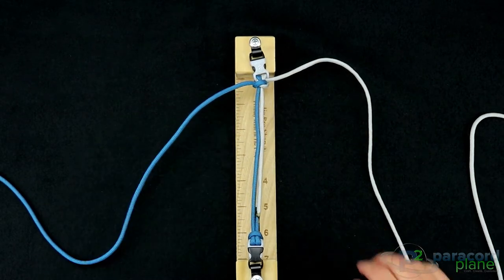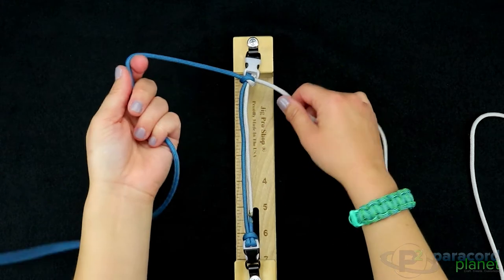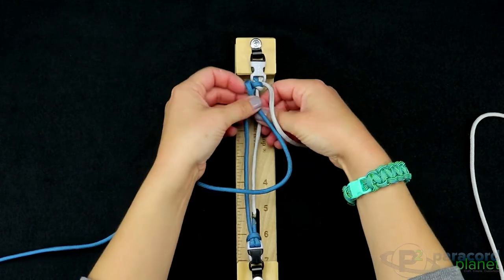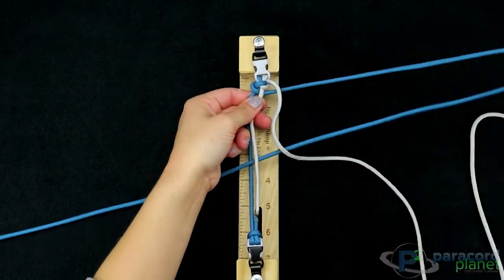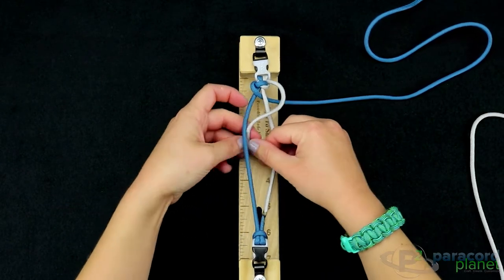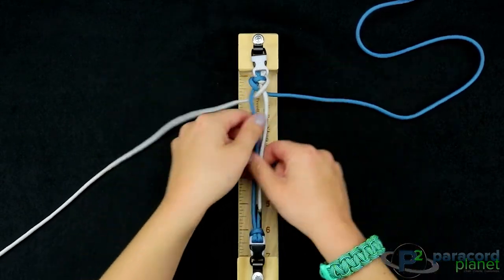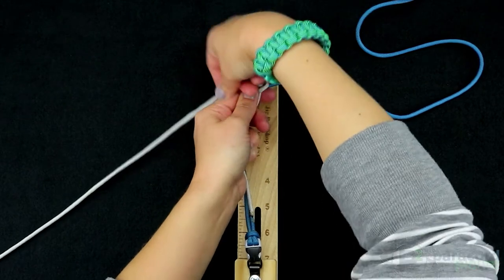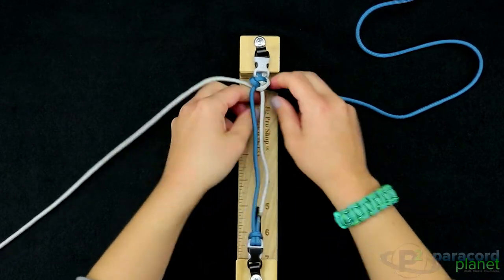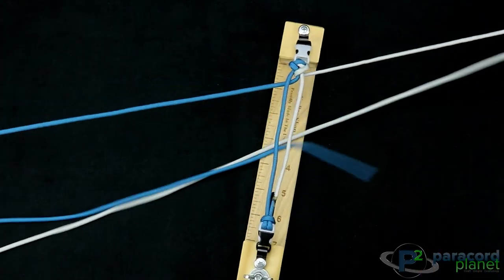Now this is a pretty simple weave. All you're going to do is take your cord on the left and go through the center, take your cord on the right and go through the center to the left. Pull them tight, pushing them up, and then twist them. Just like that.